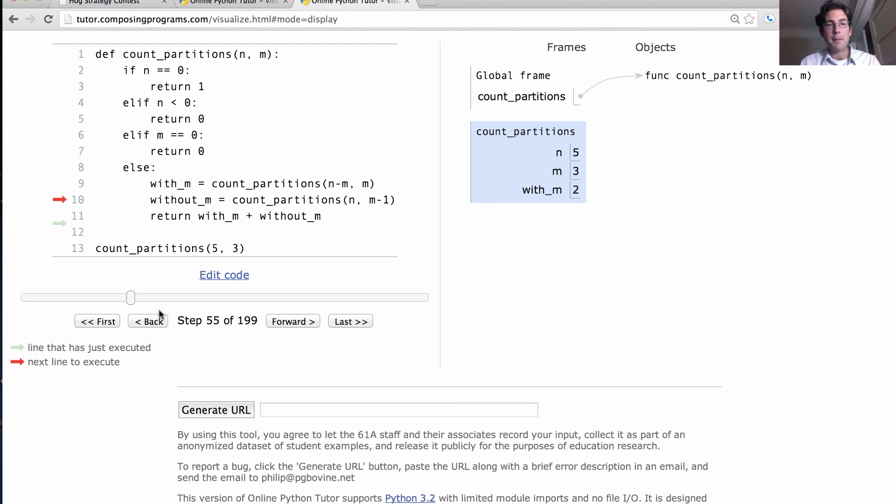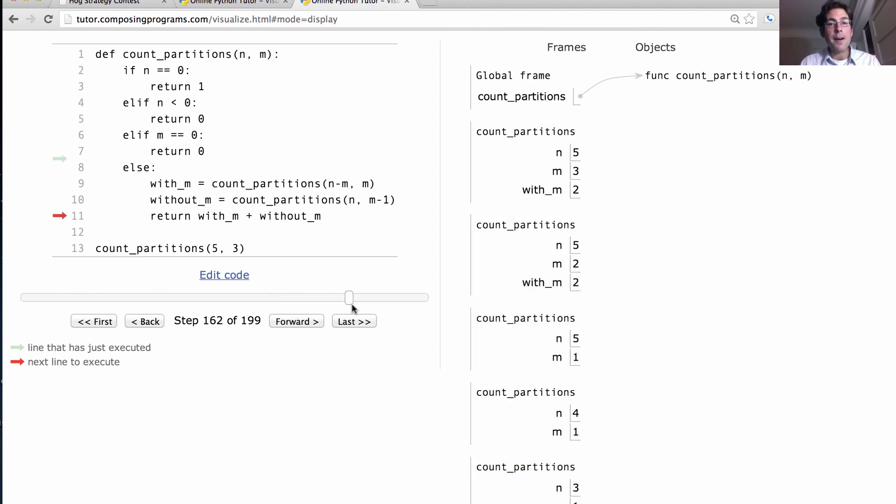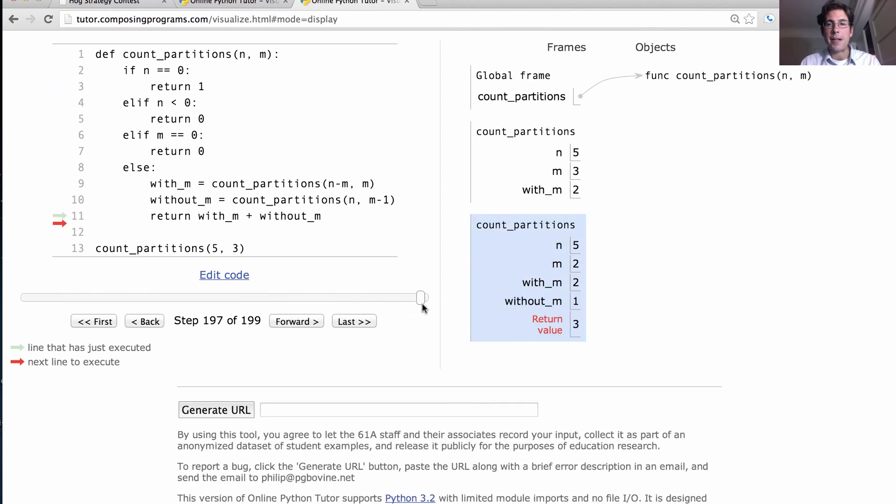But, we still have to compute the other half without_m, which is an even longer process, which eventually winds up returning 3, bound to without_m, and that's our return value of 5.